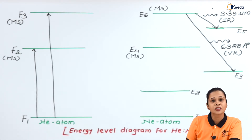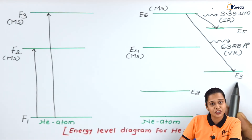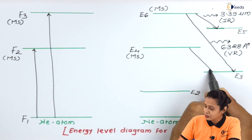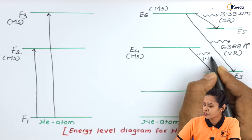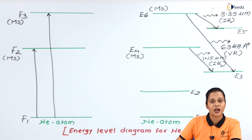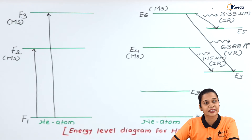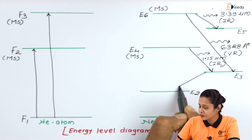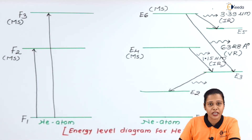The third transition is from E4 to E3. Since E3 is virtually empty and E4 is a metastable state, laser action occurs here, producing stimulated emission with a wavelength of 1.15 micrometers, again in the IR region. E3 is only an excited state, meaning the lifetime of particles there is very short, so spontaneously these particles come back to energy level E2 via spontaneous emission.